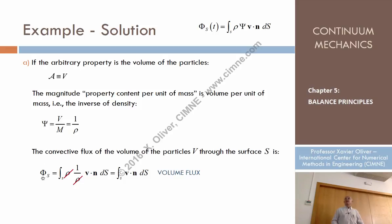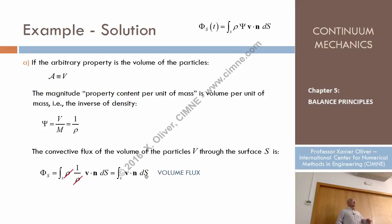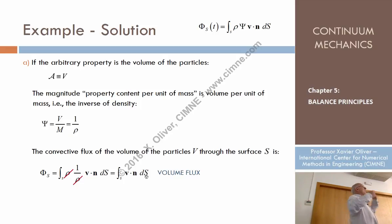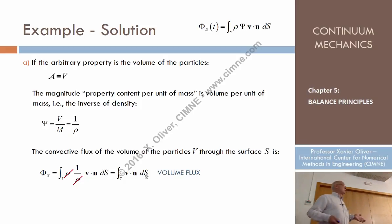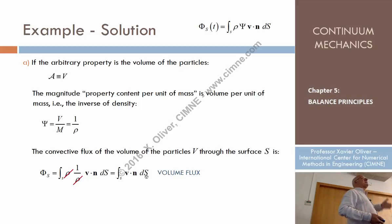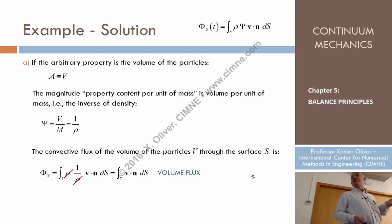The flux would be the integral of rho times phi, which is 1 over rho, times B·n differential of S — so it's the integral over a surface of the velocity times the normal times differential of S. This is the convective flux of volume: the amount of volume that crosses a surface per unit of time. In hydraulics, that is called 'caudal' in Spanish, or 'volume flux' in English.